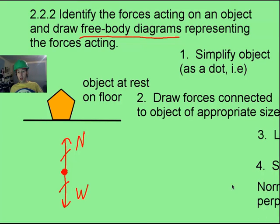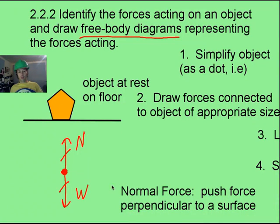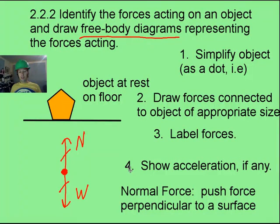N stands for the normal force, and that is, as it says here, always perpendicular. So from a floor, it's always going to be going straight up. If you've got something at an angle, then it's going to be going perpendicular to whatever surface is at that angle. Now I labeled my forces, normal and weight. And then, if there's any acceleration, I show that. There is no acceleration, so I'm going to write the acceleration is equal to zero. That's it. That's my free body diagram.